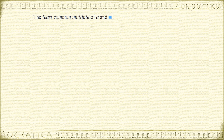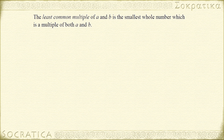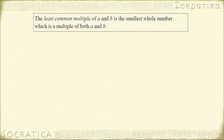The least common multiple of a and b is the smallest whole number that's a multiple of both a and b. Another way to think about this is the least common multiple is the smallest integer which a divides evenly and which b divides evenly. You write this as LCM of a and b.